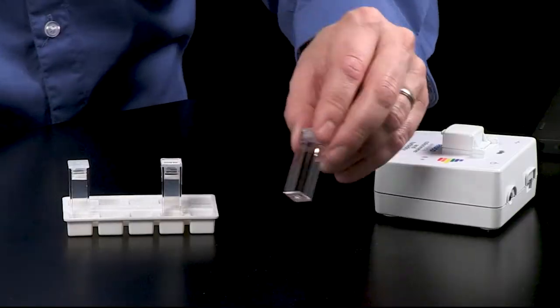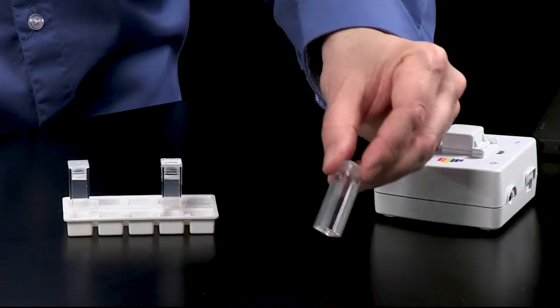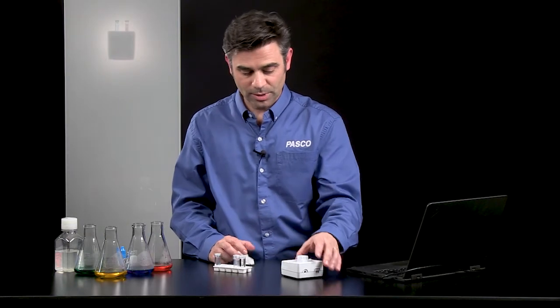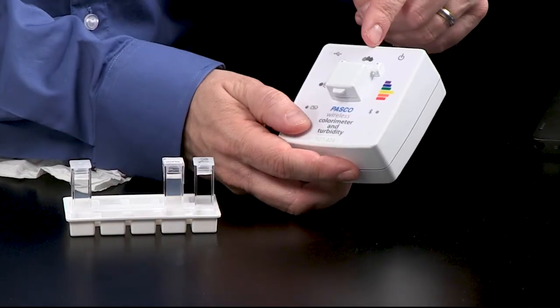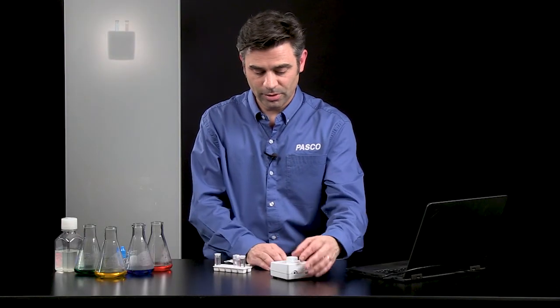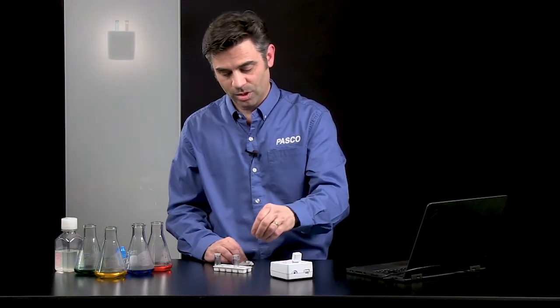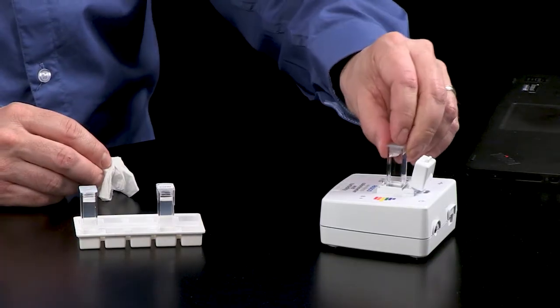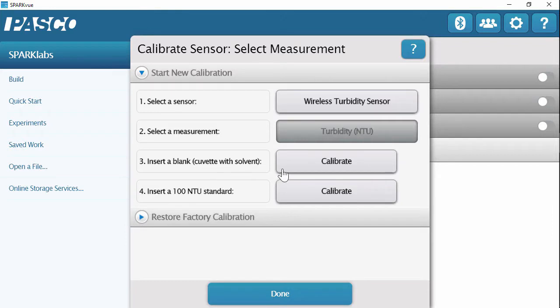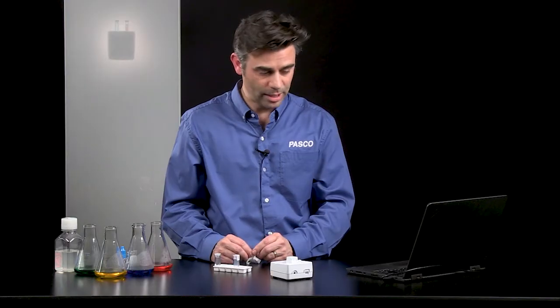So if you notice when I'm doing turbidity, you want to make sure you're using the four-sided clear cuvettes. And that is because the turbidity measurements, the light is coming perpendicular to the detector. So I'm going to use this four-sided clear cuvette. I'm going to put in my blank or my 0 NTU standard. I'm going to calibrate. I get that check. So I know that the calibration is complete.